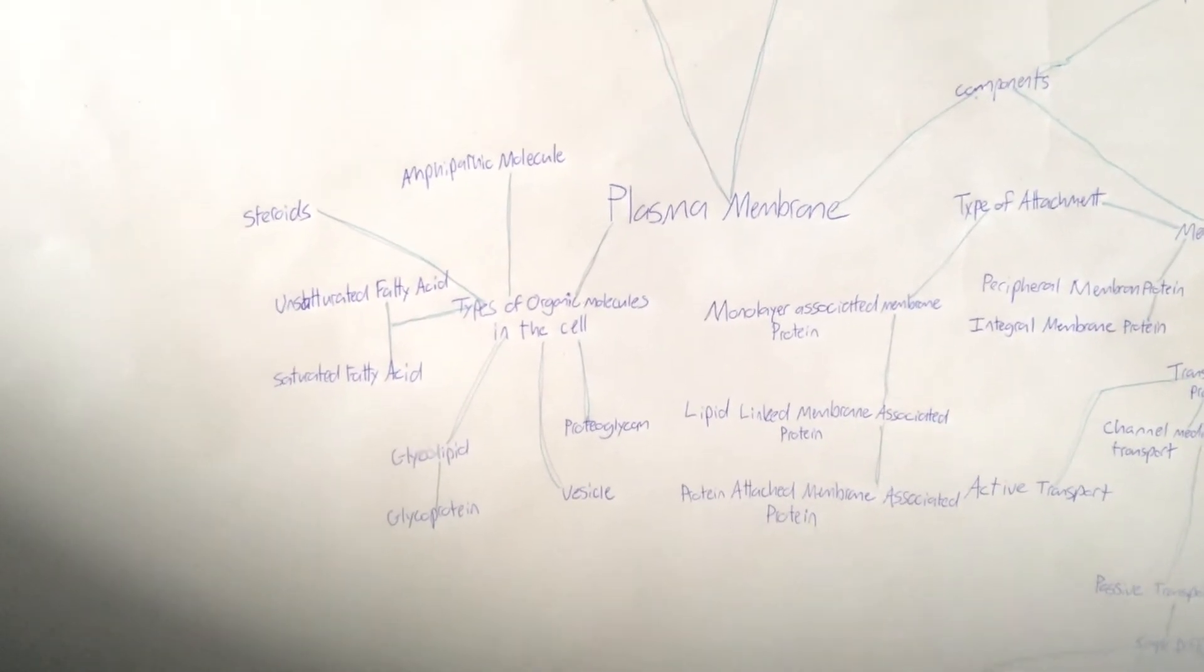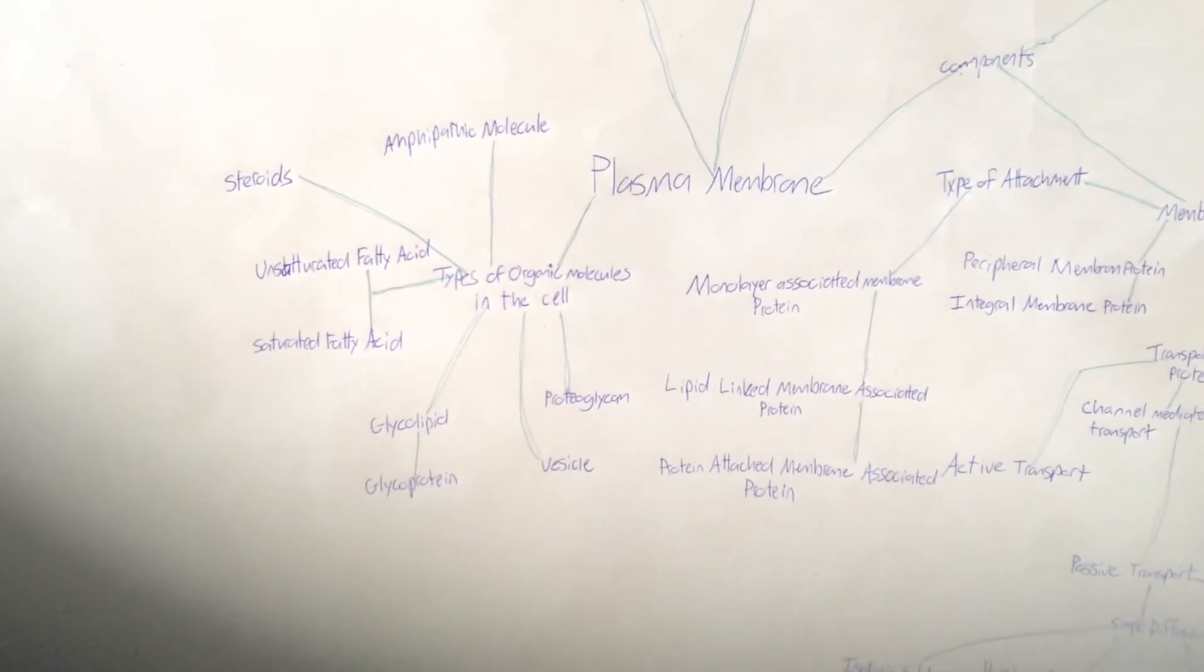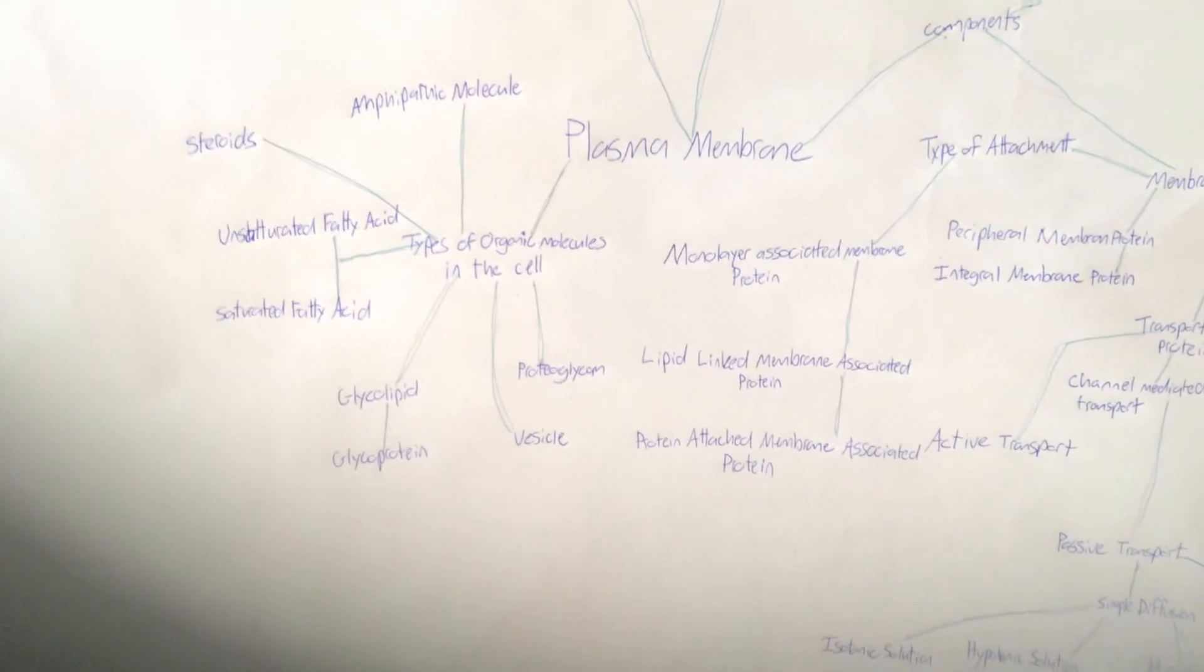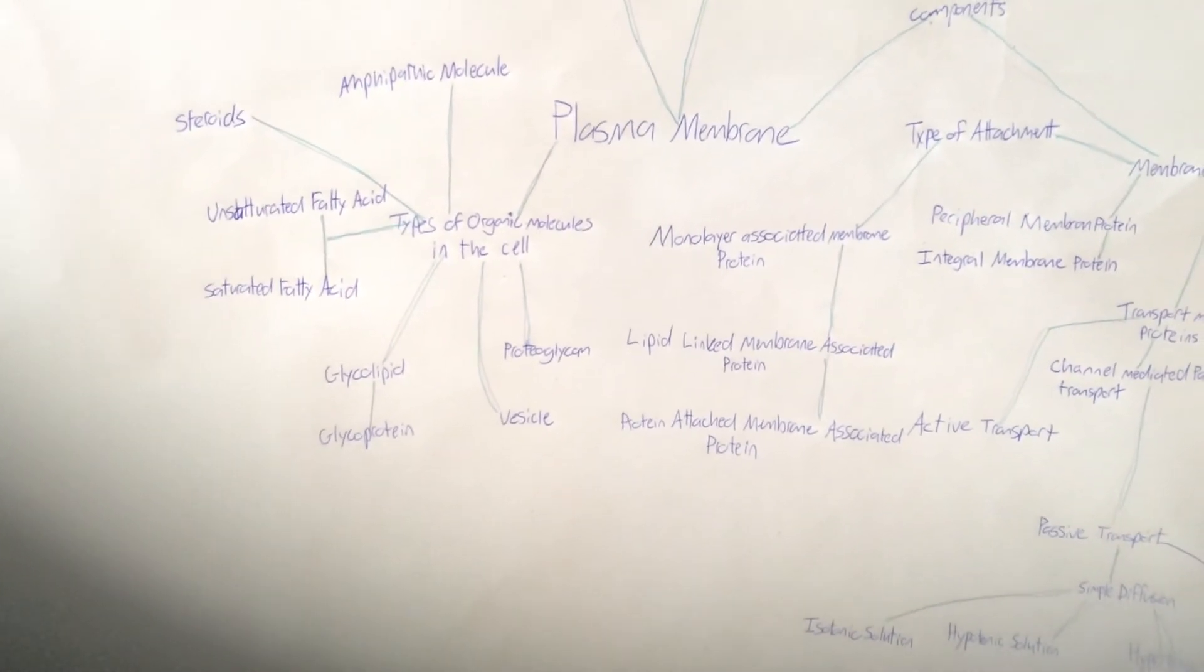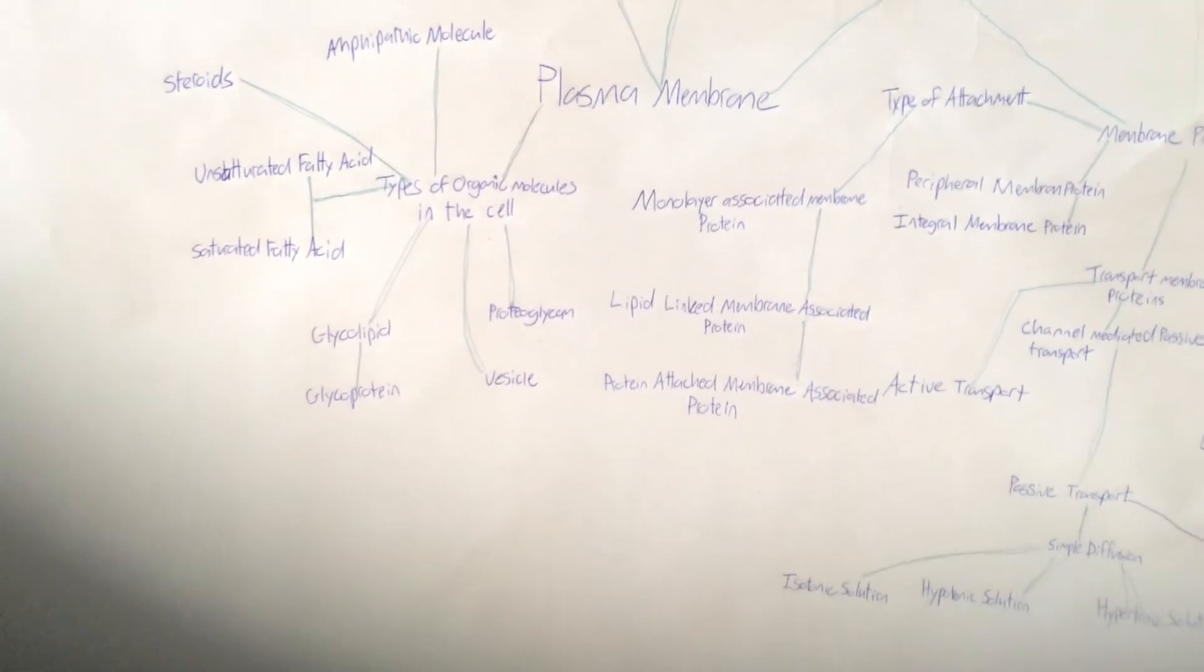And then we have steroids, unsaturated fatty acid, glycolipid, glycoprotein, proteoglycan, and the vesicle.